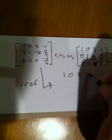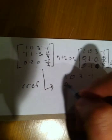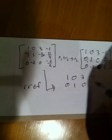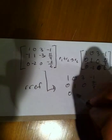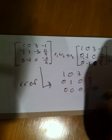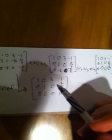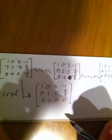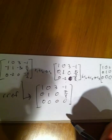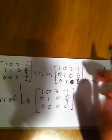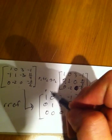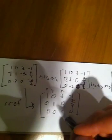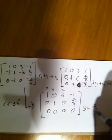0, 1, 0, 7 over 4. 0, 0, 0, 0, 0. Now this tells us a few things. This tells us that there's one degree of freedom. This also tells us that we can write, if this was x, y, and z, if this was your x, y, and z, this would tell us that y equals 7 over 4.